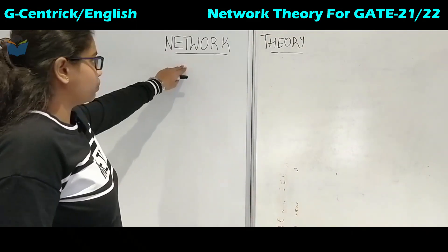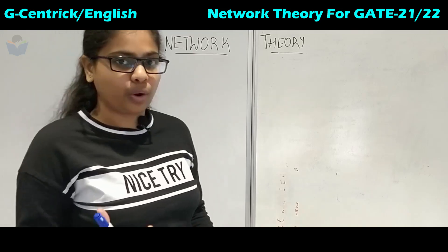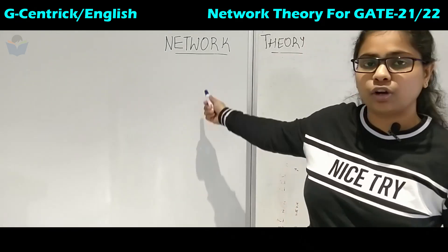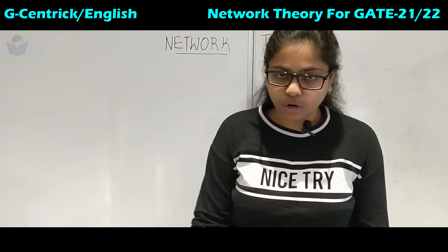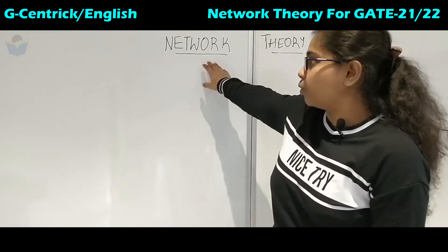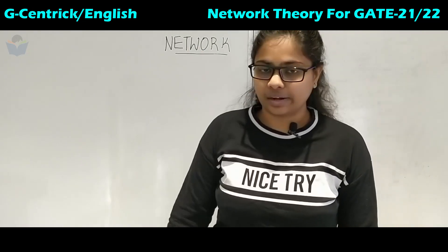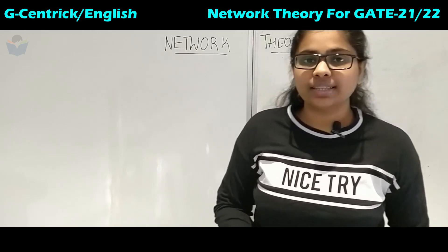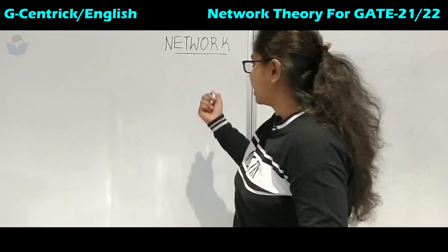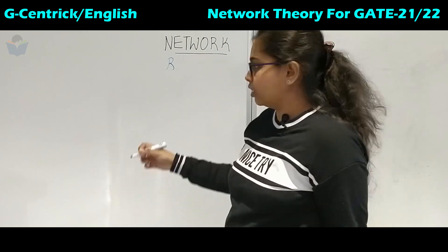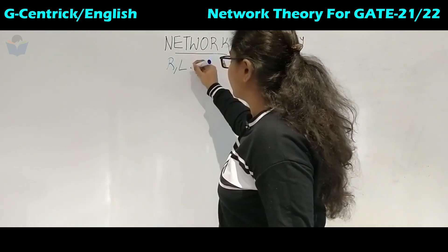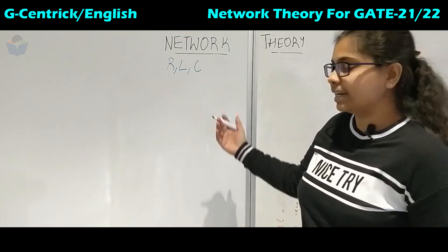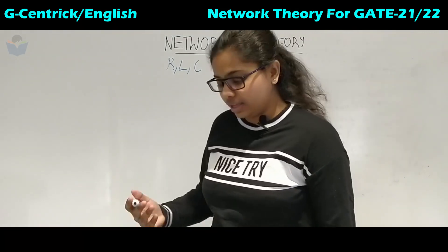Coming to the word 'network' — what does it mean? It is a very vast term. It can refer to a Wi-Fi network or a network of people. But what makes it an electrical network? It is the presence of electrical elements. These electrical elements can be resistors, inductors, capacitors, or batteries. When these are connected together, it makes an electrical network.